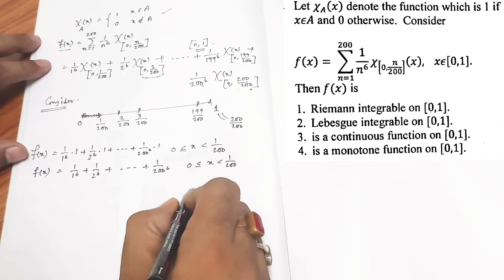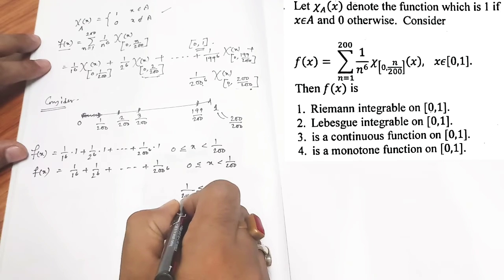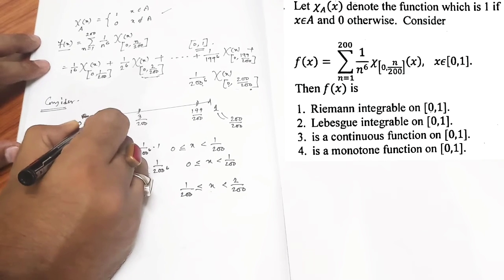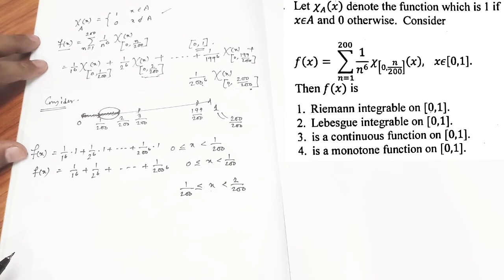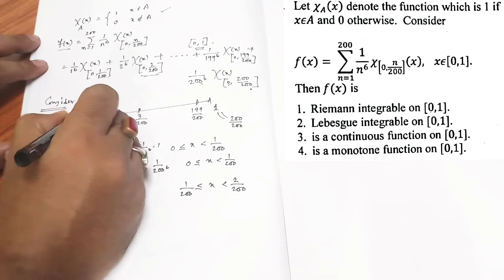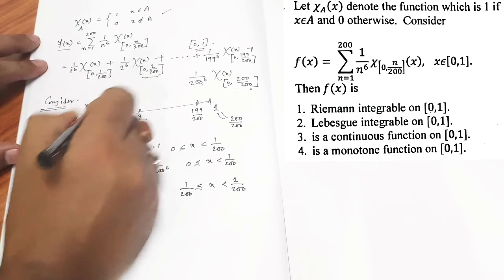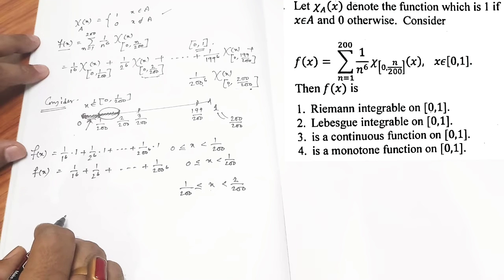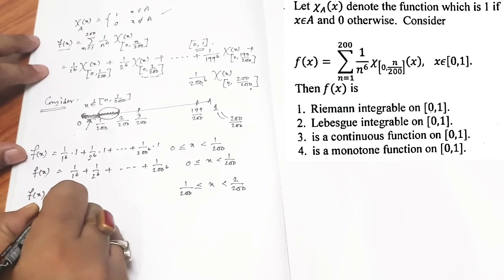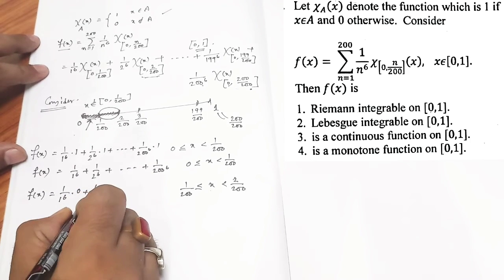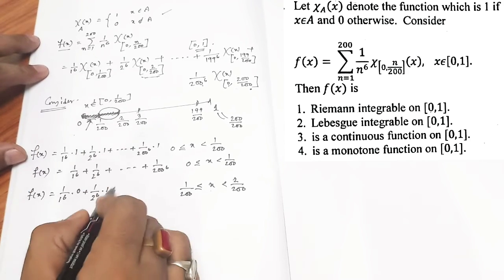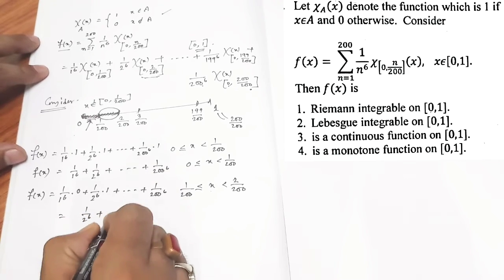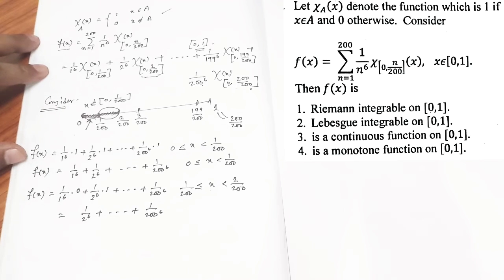Now if you consider x in the second interval, that means you are considering x to be in this interval. That immediately implies your x does not belong in the first interval. So in this interval, your indicator function will provide 0. That implies 1 by 1 to the power 6 multiplied with 0. But rest of the terms, this indicator function will give 1. So you have 1/2 to the power 6 plus continuing.